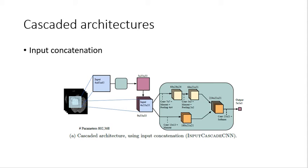In the first input concatenation architecture, we provide the first convolutional network's output directly as input to the second CNN, which you can see on the figure here.